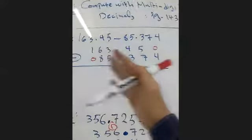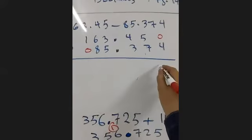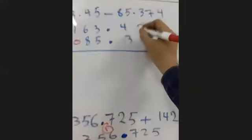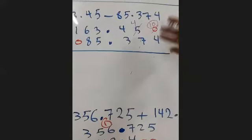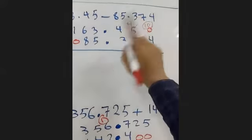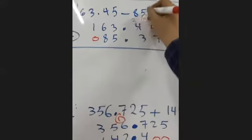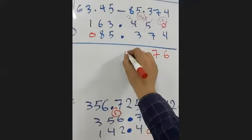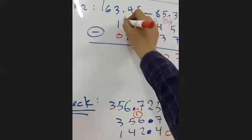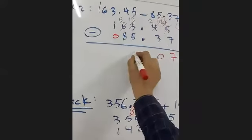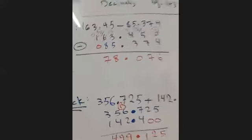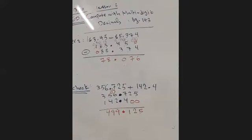Now let's subtract normally. We add a zero as a placeholder. 0 minus 4 — can't do it, borrow 1. This becomes 10, minus 4 is 6. 4 minus 7 — can't do it, borrow 1, becomes 14 minus 7 is 7. 3 minus 3 is 0. Decimal comes in its place. 3 minus 5 — can't do it, borrow, becomes 13 minus 5 is 8. 5 minus 8 — can't do it, borrow, 15 minus 8 is 7. The answer is 78.076.